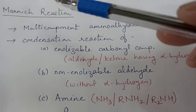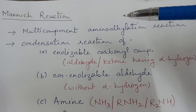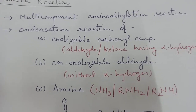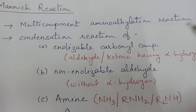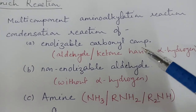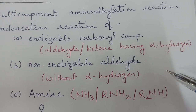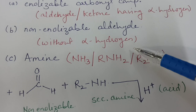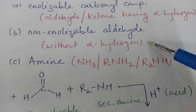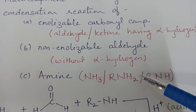This reaction is an important reaction of carbonyl compounds. It is a multi-component aminoalkylation reaction which involves condensation of an enolizable carbonyl compound — meaning any aldehyde or ketone having an alpha hydrogen — and a non-enolizable carbonyl compound, generally an aldehyde without alpha hydrogen, which is typically taken as formaldehyde.